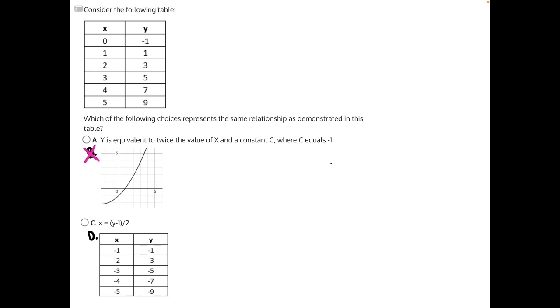A says Y is equivalent to twice the value of X and a constant C, where C equals negative 1. Let's put that into an equation. Y is equivalent to twice the value of X and, which means to add, and a constant C, where C is equal to negative 1. We would write this Y is equal to 2X plus negative 1, and adding a negative is just the same as subtracting a positive. So that would be 2X minus 1.